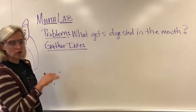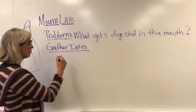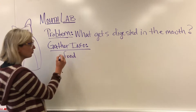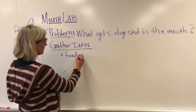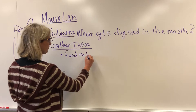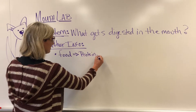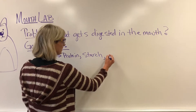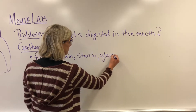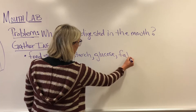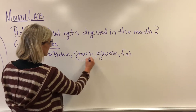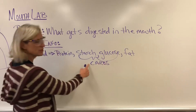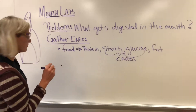We already know some things about food — what we actually mean by the word food. We've talked about our foods being protein, starch, glucose or sugar, and fat. And we may have talked about starch and glucose being our carbs.